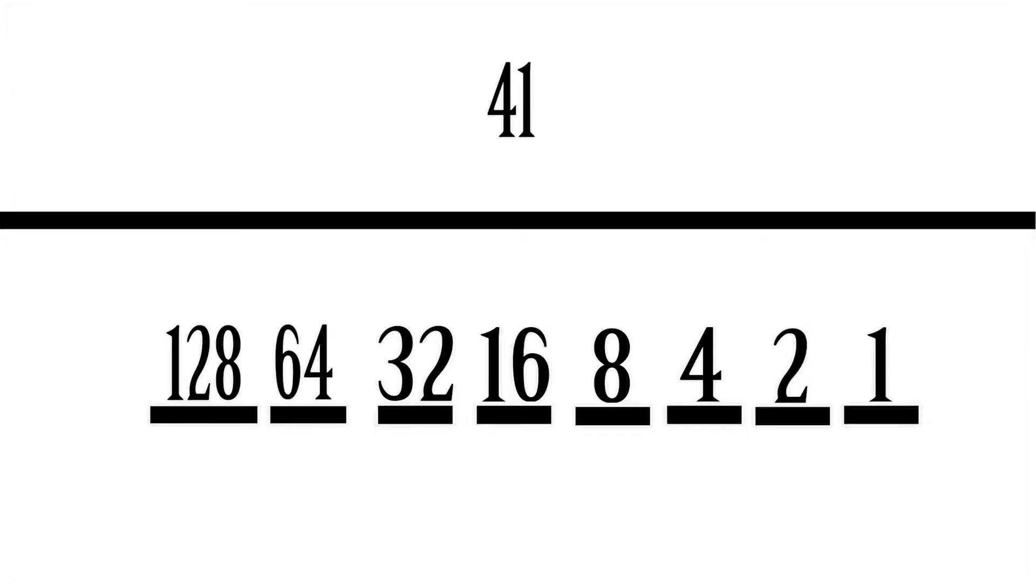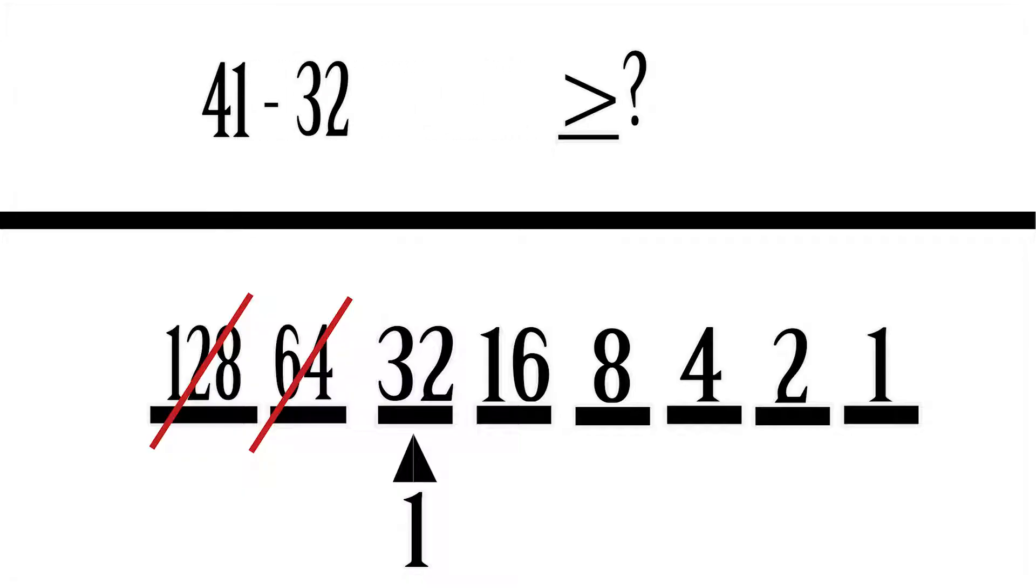The biggest value we can fit inside of 41, or you can think of which value is less than or equal to the number you're trying to do, would be 32 because 64 is bigger than 41. So we're gonna stop there. The next one's 32, that's smaller than 41. Alright, so we have a one under 32 which means we're gonna use that number. Now you're gonna take your number 41, which is our original number, and subtract the 32 that you use. So we have a one under the 32.